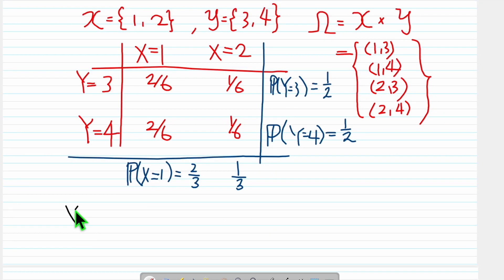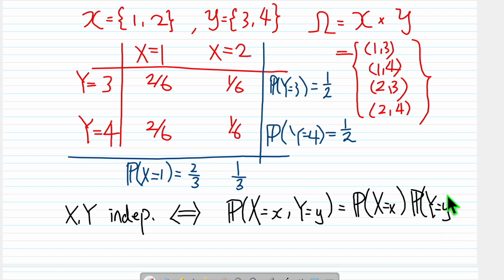So X, Y independent if and only if P(X,Y) equals P(X) times P(Y). And for what? For all x in sample space X, for all y in sample space Y, or in short, for all (x,y) in Ω. Remember, this is the definition. So if the joint can be split into product of marginal, then they are independent.